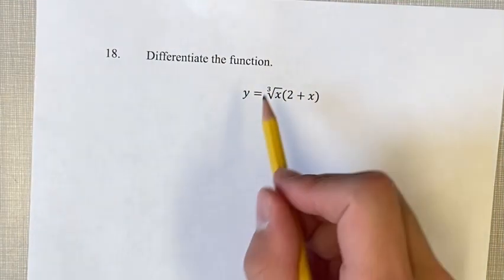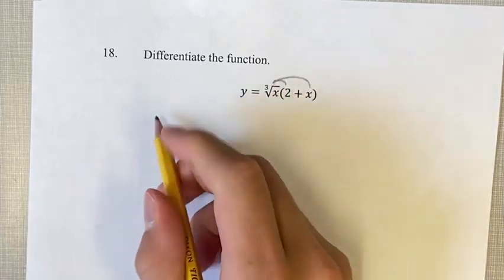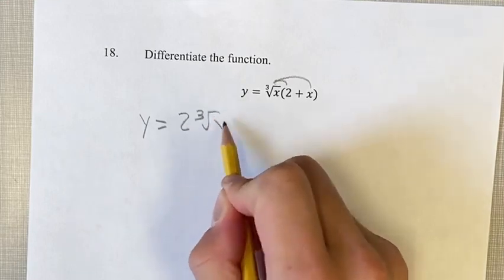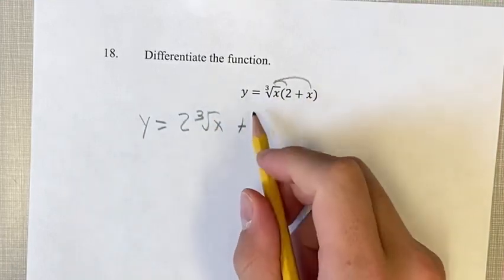So it's going to be easier for us if we distribute this and get two separate terms. That'll give us y equals 2 times the cube root of x plus x times the cube root of x.